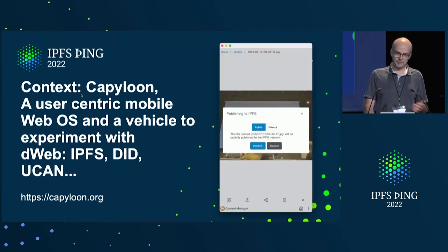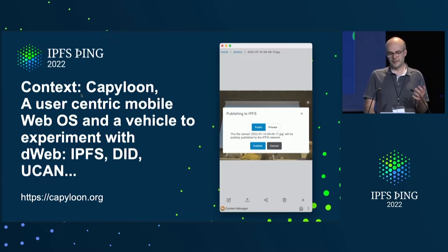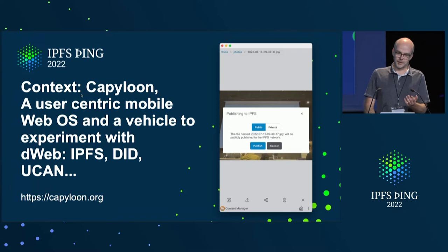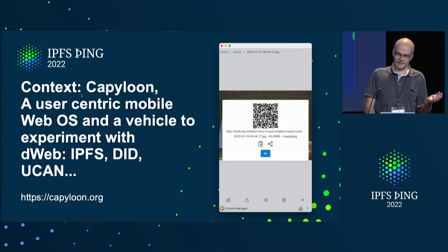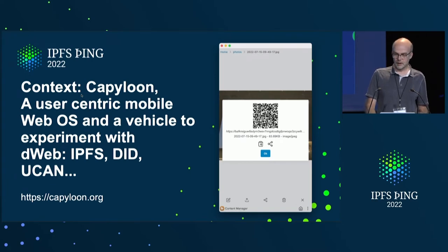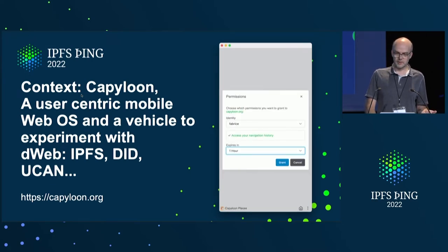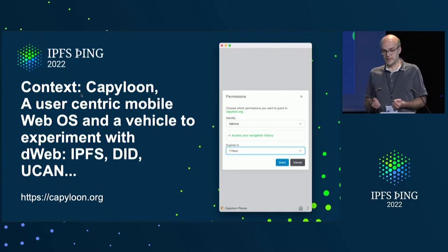We can also easily publish to IPFS. It's not done the same way that Morph showed with students doing fetch. Here we can push any local resource — that means any blob — to IPFS using Estuary. It's a picture taken this morning during the session. You can see progress and you end up with a nice URL that you can share with a QR code or copy to your clipboard. We have UCAN support that we started to use to get permissions and capabilities for some of the APIs that we added.